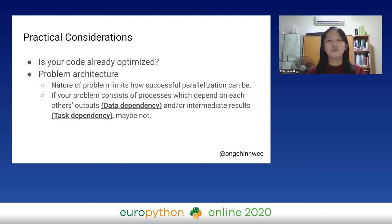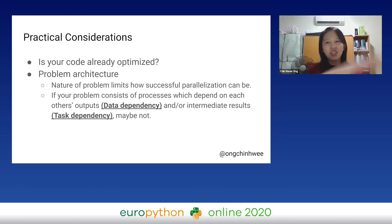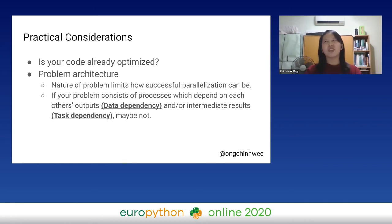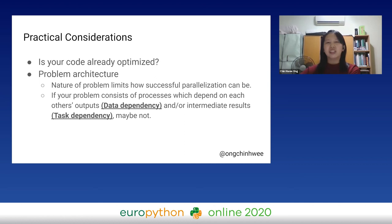Data dependency means I have a function with an input and output, and a second function depends on the output of the first. If there's dependency between these processes, you might not want to parallelize that. Or it could be that one task produces an intermediate output that another process needs — then you can't just parallelize your code that way.